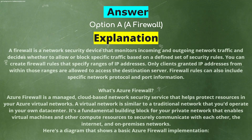Explanation: A firewall is a network security device that monitors incoming and outgoing network traffic and decides whether to allow or block specific traffic based on a defined set of security rules. You can create firewall rules that specify ranges of IP addresses — only clients granted IP addresses within those ranges are allowed to access the destination server. Firewall rules can also include specific network protocol and port information.